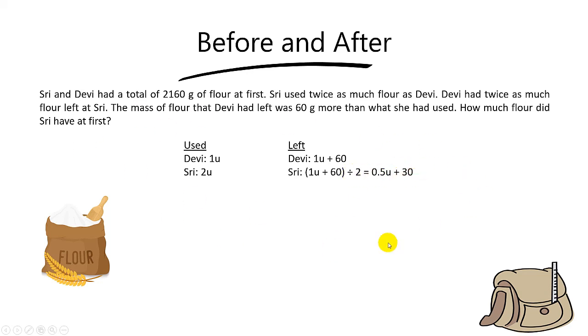Alright, so with these two tables in mind, we can now find the total mass for Debbie at first. You take the amount of flour that she used, plus the amount of flour left, you get 2 units plus 60. And for Shree, if you take 2 units plus half a unit, you get 2.5 units, then plus the 30 behind.